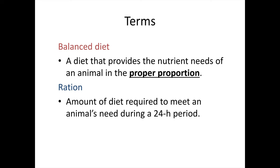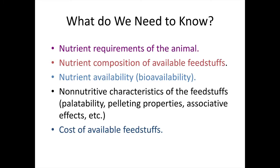A balanced diet is one that provides the nutrient needs of an animal in the proper proportion. When we discussed amino acids in the diet, it's not just the quantity that's important, but the balance of those amino acids, the balance of those minerals, the balance of all nutrients to support the needs of the animal. A ration is the amount of diet required to meet an animal's need during a 24-hour period.